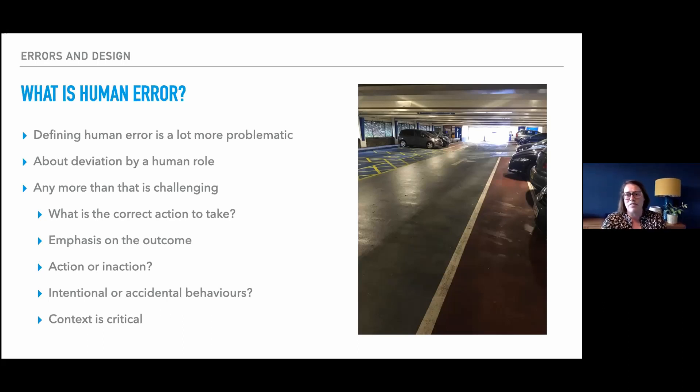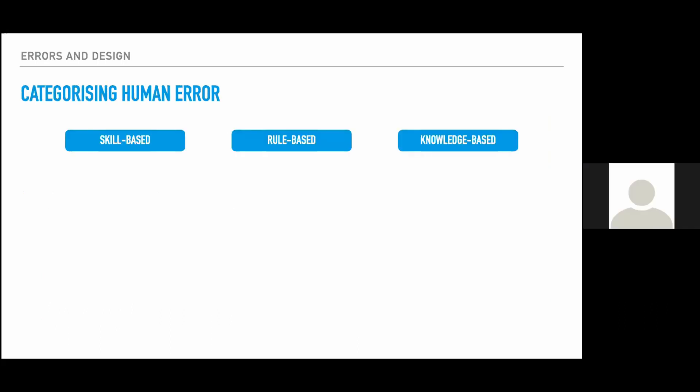So this hasn't stopped very many eminent human factor specialists working on this topic, because this is clearly something of interest. Errors are associated with significant losses of life, of assets, and getting this right is something really important. What I'm going to talk through next is a couple of different categorisation approaches, which was the first approach to really trying to understand human error in more detail. The first one I'm going to talk through is Rasmussen's model. What Rasmussen tried to do was break down error into three different types, which he called skill-based, rule-based, and knowledge-based.